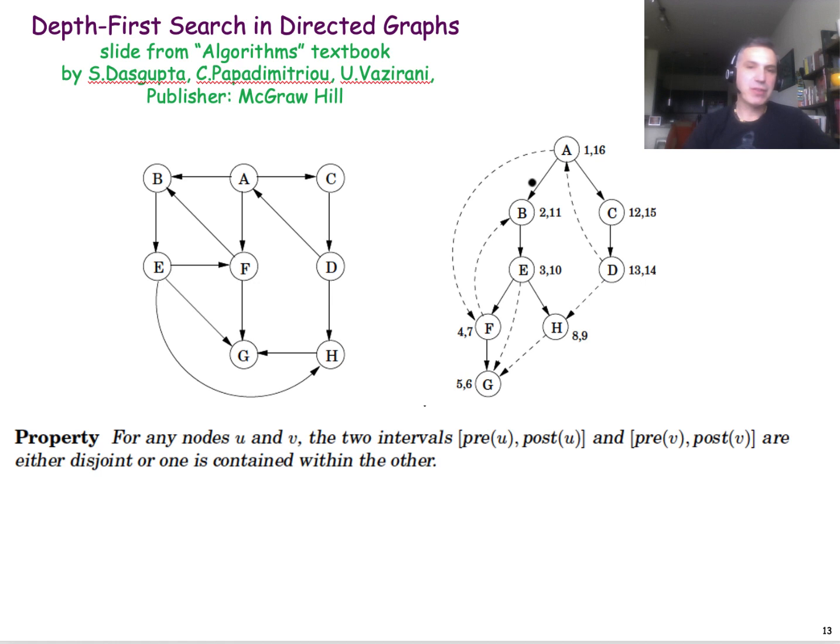The depth-first search algorithm is exactly the same in directed graphs, we just need to pay more attention to the direction of the edges. So here I give you a directed graph, and the explore function starts from node A. I will not go through the example in detail, but we have flagged here the pre-timestamp and the post-timestamp for every node, as you can easily check.